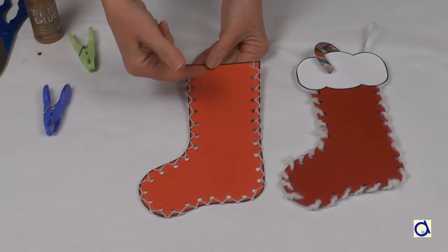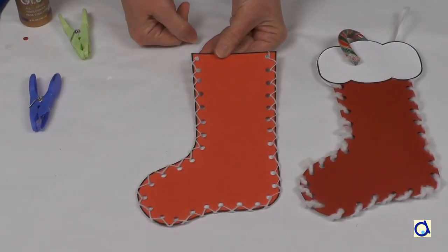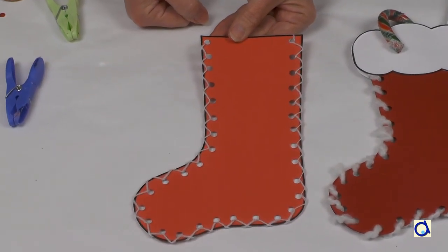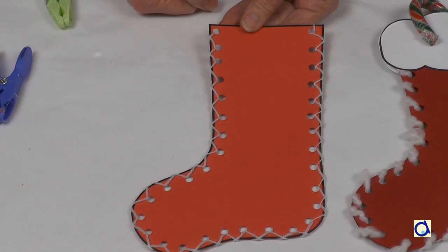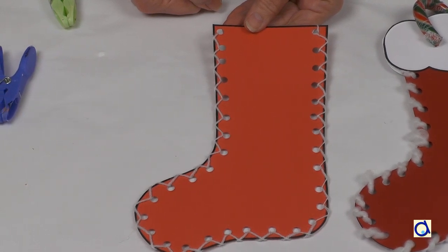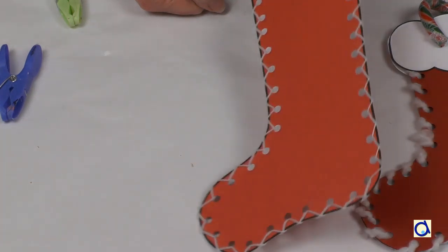A third possibility is to start as in the second example and then go back in the opposite direction. This gives an effect of crossing thread. I chose to use only one colour but you could very well use two different colours.